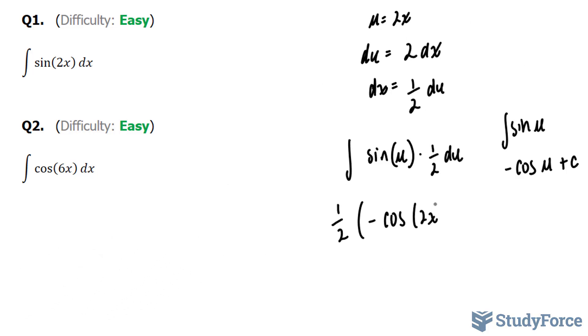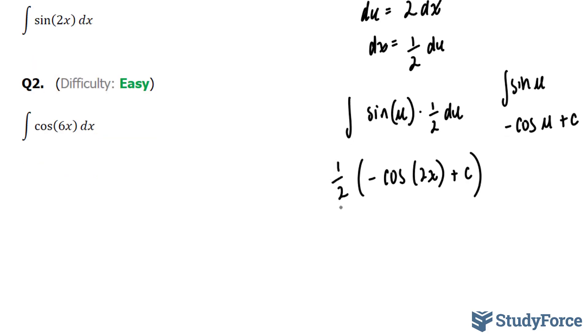I'm going to replace the u with 2x plus c. My final step is to multiply this half inwards, where I end up with negative half cosine 2x plus c.